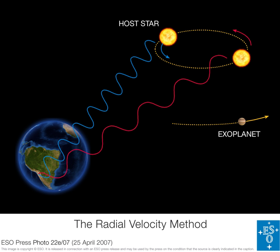The radial velocity of an object with respect to a given point is the rate of change of the distance between the object and the point. That is, the radial velocity is the component of the object's velocity that points in the direction of the radius connecting the object and the point.